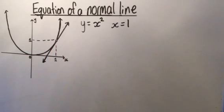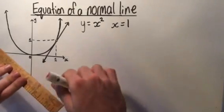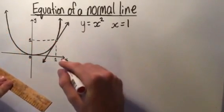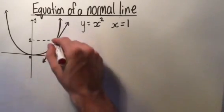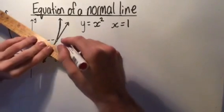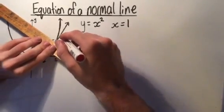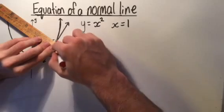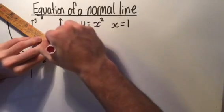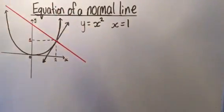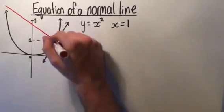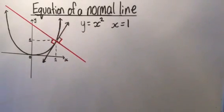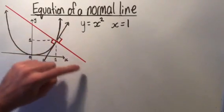With our normal line, we're going to draw a normal, which is still a straight line and it still goes through the point at x equals 1, but it's going to form a right angle with the tangent. So it will look something like this — and most importantly, there is a right angle there.